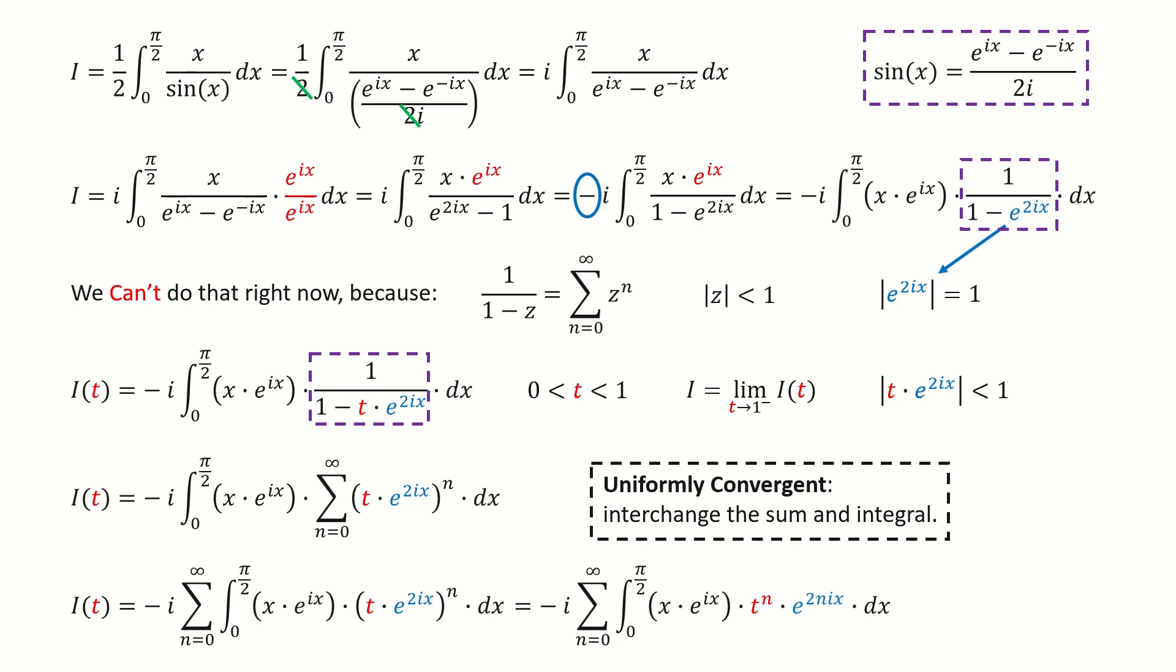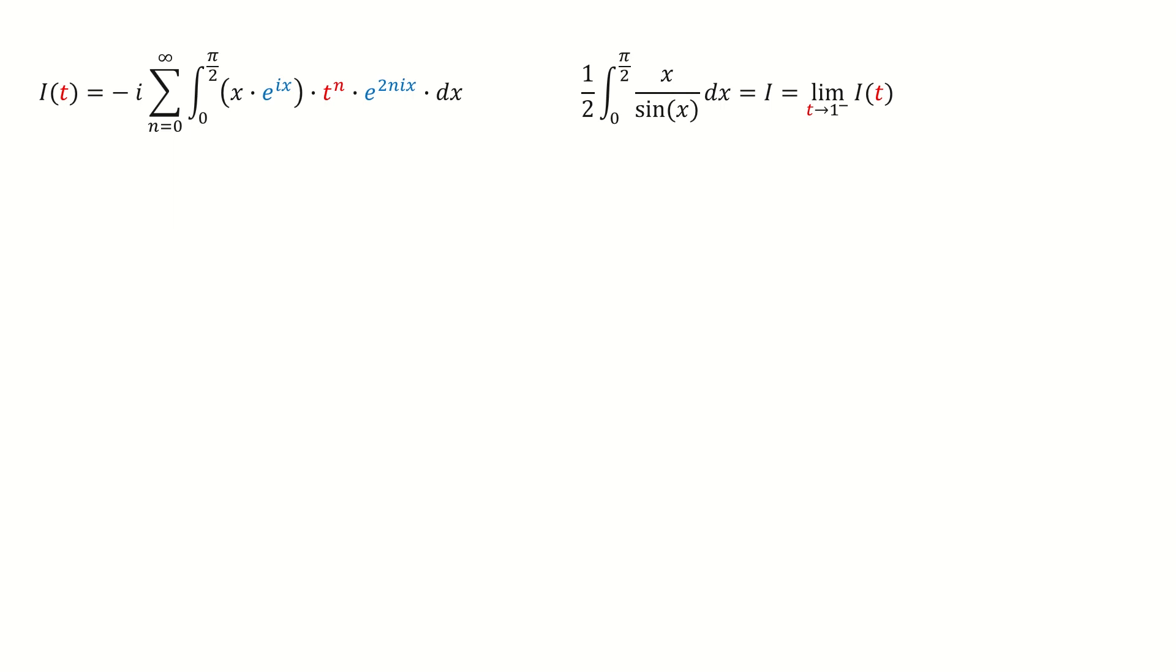Then we expand the power n term, so we got here. I copy them here. Because this integral is respect to x, we can take this red term out of the integral. For these two blue terms, we can group them together. So we got here.